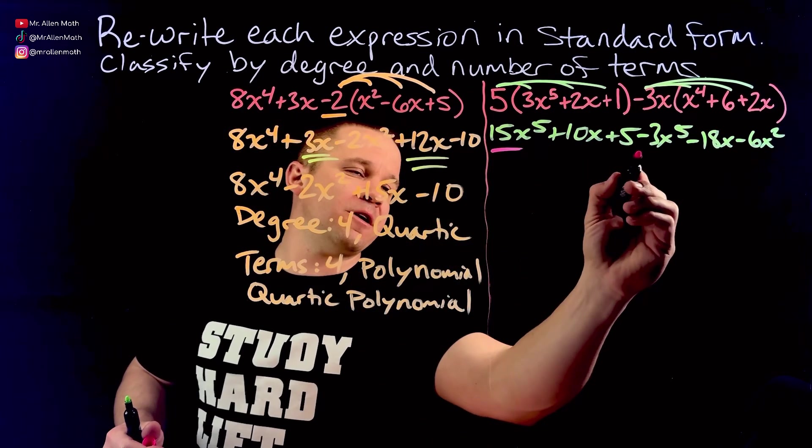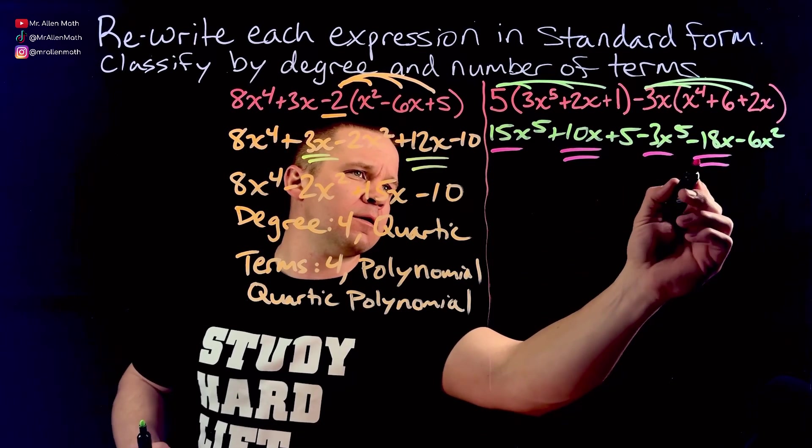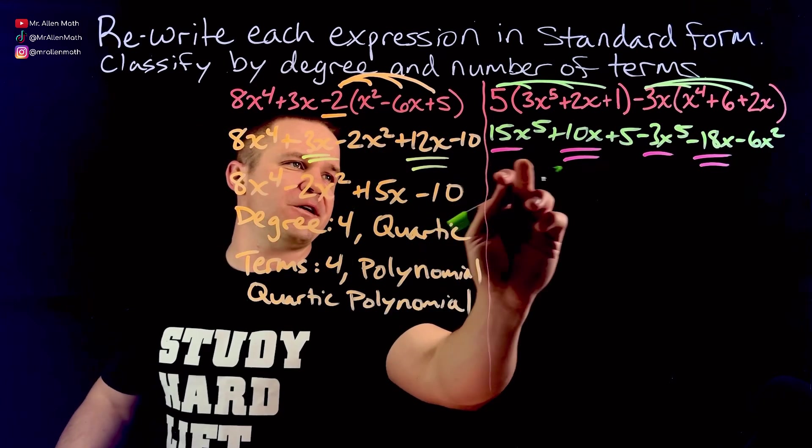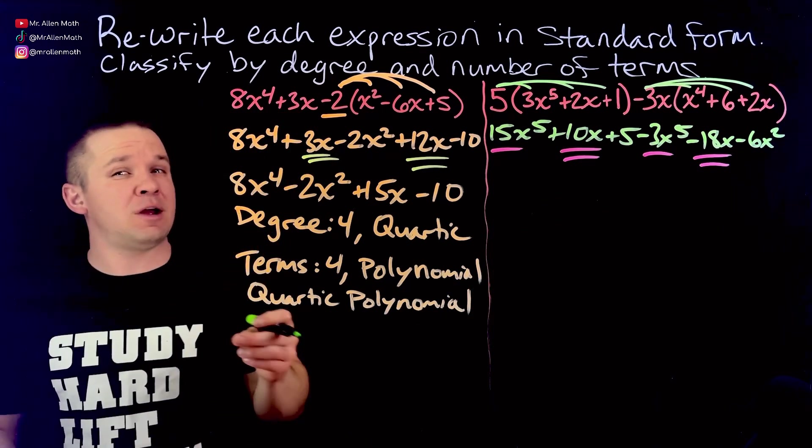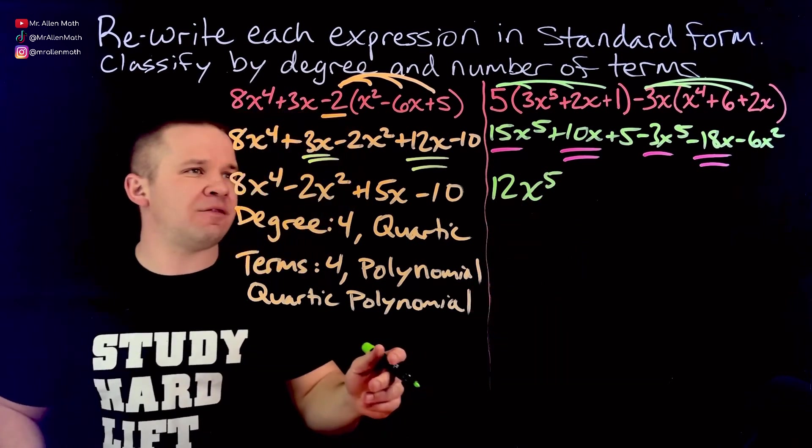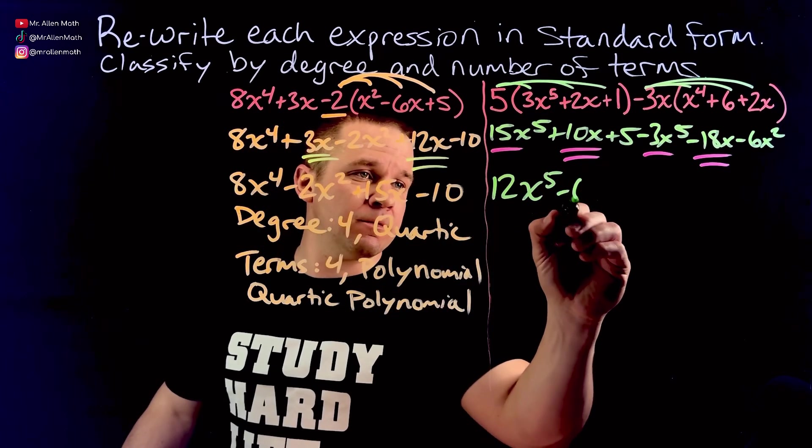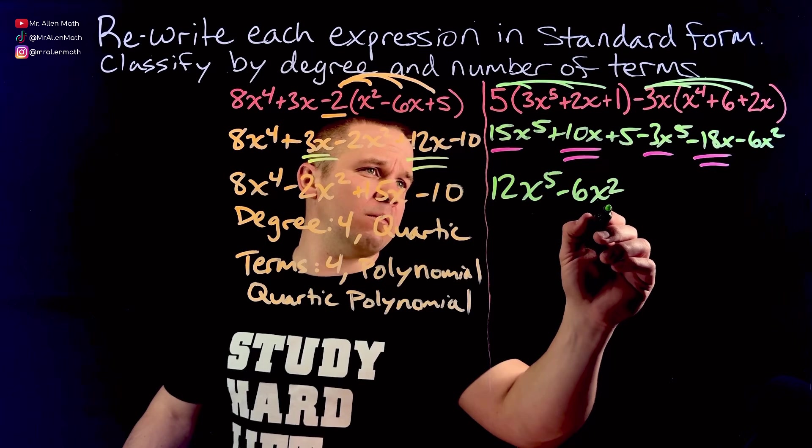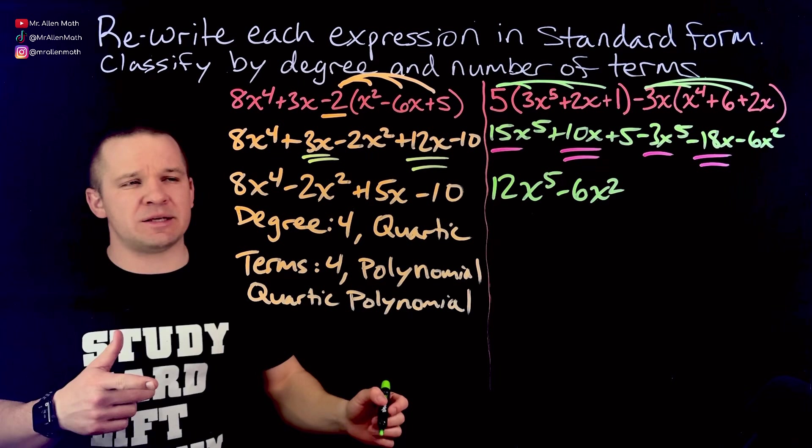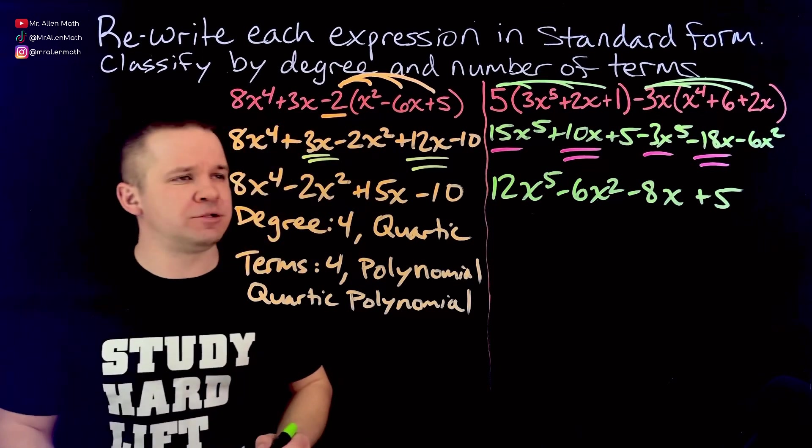Then we have negative 3x times x to the fourth. Since we have multiplication, x times x to the fourth or x to the first times x to the fourth is x to the fifth. So we're gonna have minus 3x to the fifth. And then we have negative 3 times 6 is negative 18x, and then we have negative 6x squared. x times x, x to the first times x to the first becomes x to the second. Like terms, we've got x to the fifth and x to the fifth, we got a couple of linear ones here. Nothing goes with my constant, nothing goes with my quadratic.